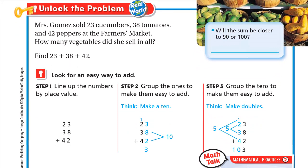Mrs. Gomez sold 23 cucumbers, 38 tomatoes, and 42 peppers at the farmer's market. How many vegetables did she sell in all? She sold 23, 38, and 42. Will the sum be closer to 90 or 100? Let's estimate: 23 is close to 20, 38 is close to 40, and 42 is close to 40. 20 plus 40 is 60, and 60 plus 40 is 100, so it will be closer to 100.